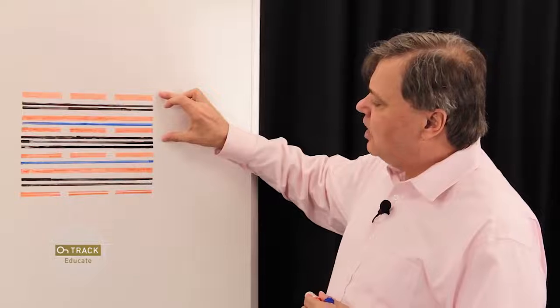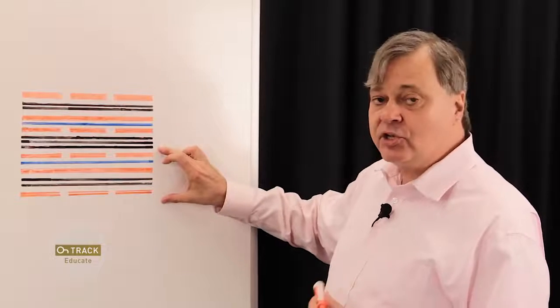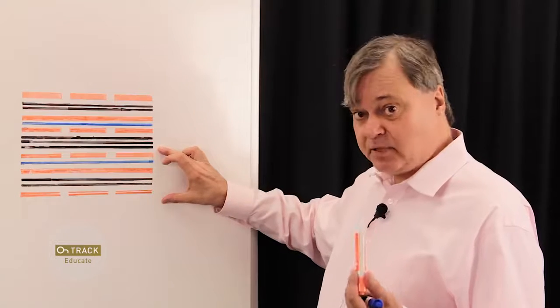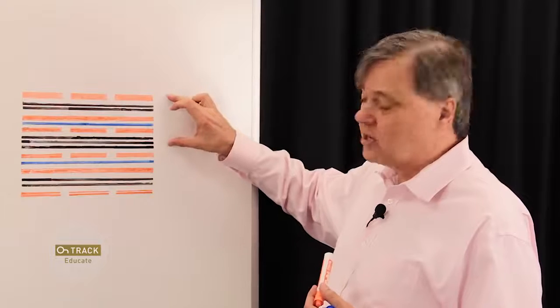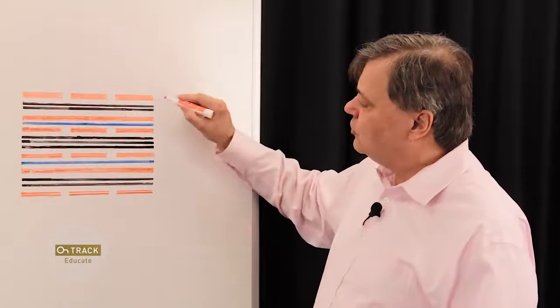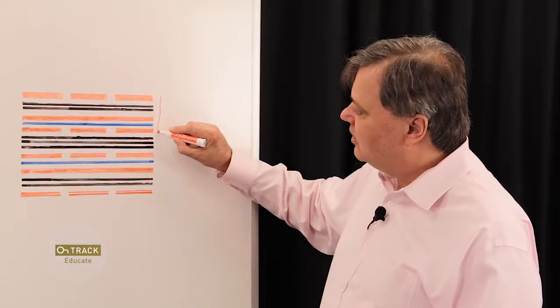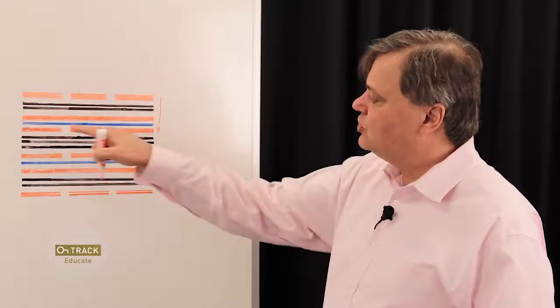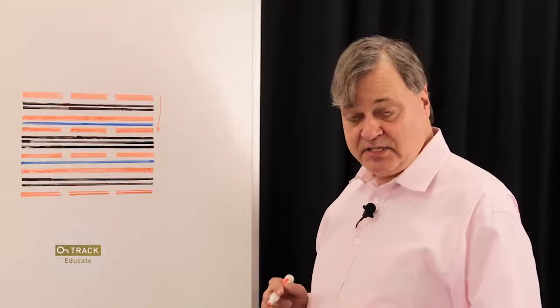Okay, another thing you need to consider are your via stacks. Now, in looking at this layer stack up, this upper portion and this lower portion could be created as sub-assemblies. These could be placed on a drill machine. They could be drilled and plated individually. We could use blind vias from the top layer down to our first high-speed signal layer.